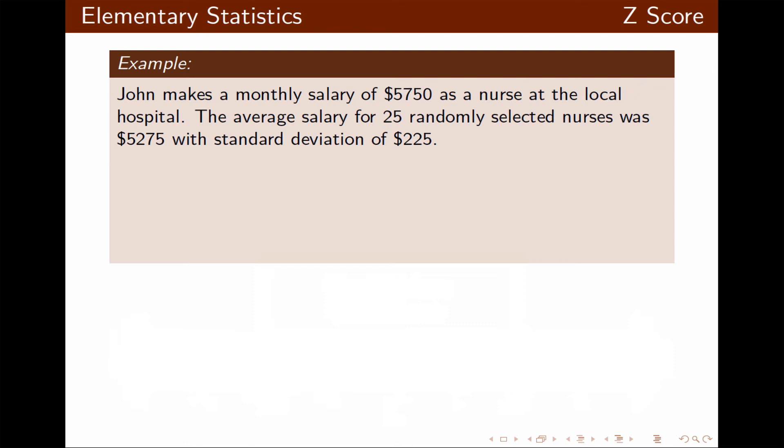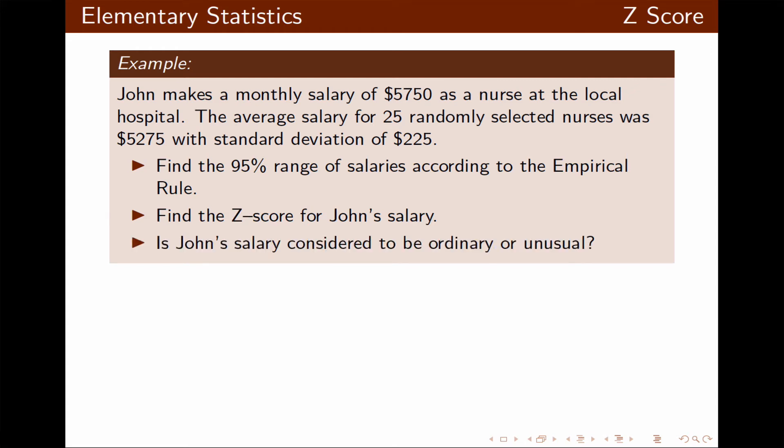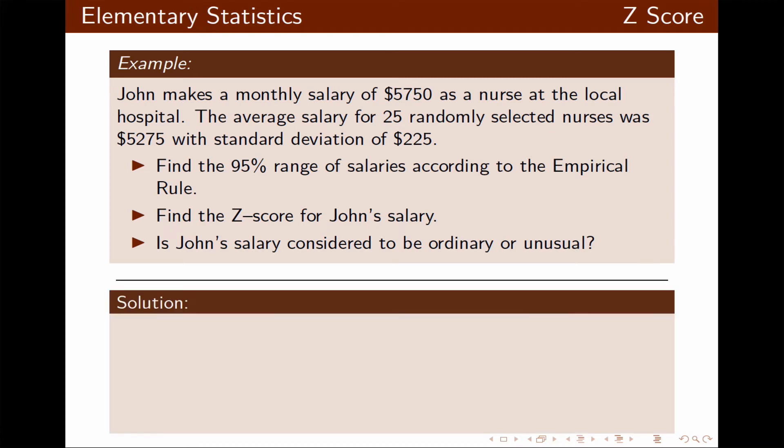The average salary for 25 randomly selected nurses was $5,275 with a standard deviation of $225. We want to find 95% range of salaries according to the empirical rule. We want to find the z-score for John's salary, and we also want to identify if John's salary was usual or unusual.